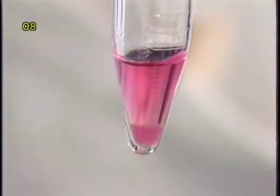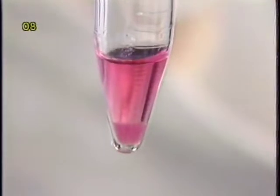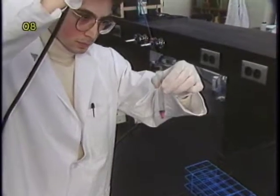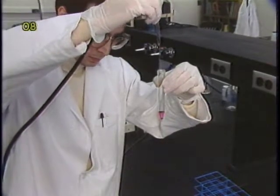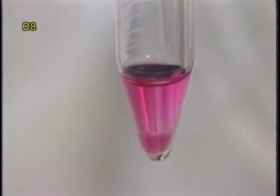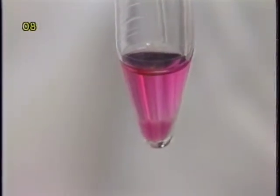After centrifugation, a sharp boundary is seen between the surface of packed microcarriers and the supernatant. Vacuum suction is then applied to remove the supernatant. Care should be taken to avoid sucking off any microcarriers.